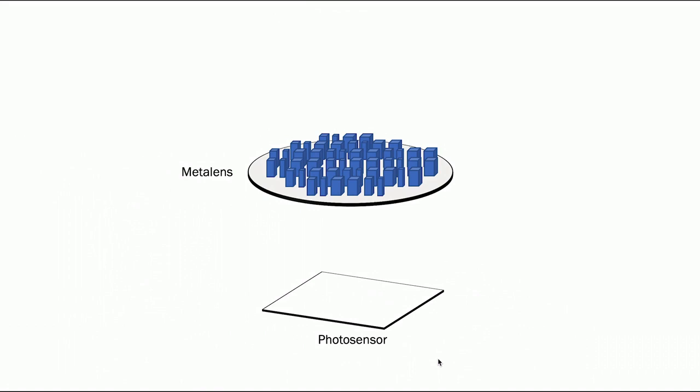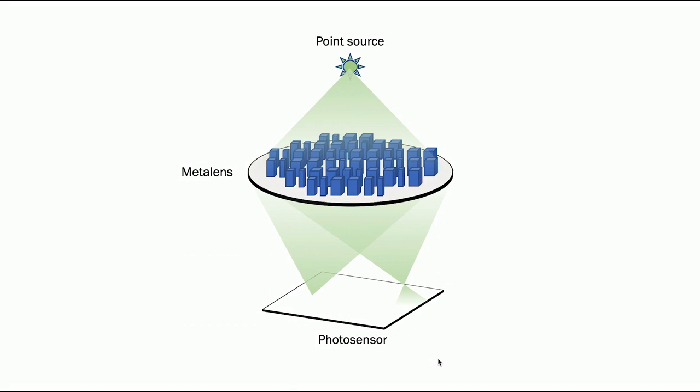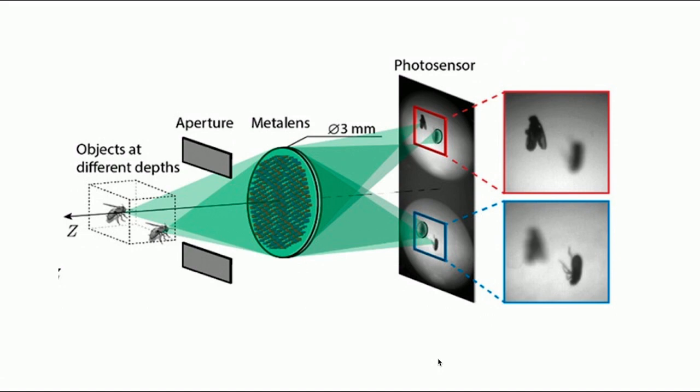One advantage of the MetaLens is multi-functioning. In our case, for example, we can design a MetaLens that can divide the incoming light and focus at two different locations with different focal lengths, so that the device can simultaneously form two images with different defocus of the scene side by side on a photo sensor.